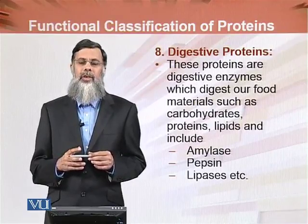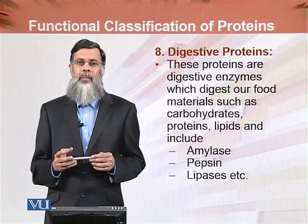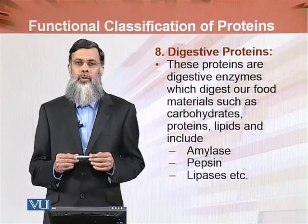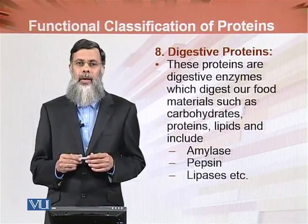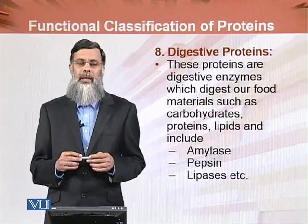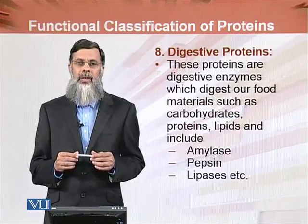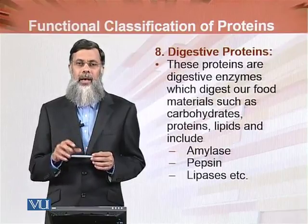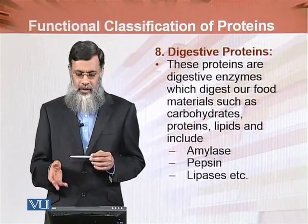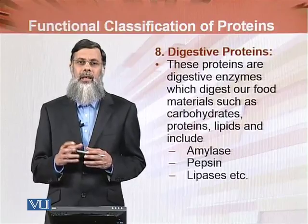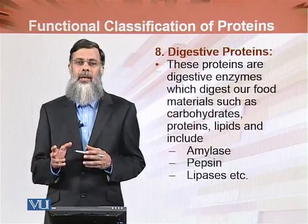Amylase, specifically alpha-amylase, is produced from the salivary glands in our mouth. It is also produced in the intestine by the pancreas, which is a gland in the gastrointestinal tract. The pancreas is also a gland that produces amylase.